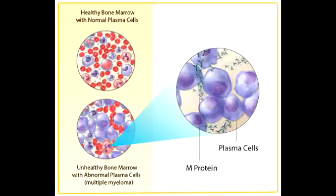What is the M spike seen in Multiple Myeloma? The M spike is due to the overabundance of monoclonal antibody — either immunoglobulin G or immunoglobulin A. Because this is a plasma cell cancer, there is increased production of IgG or IgA, leading to the M spike instead of the normal gamma spike.